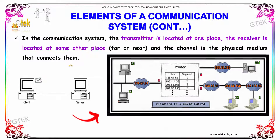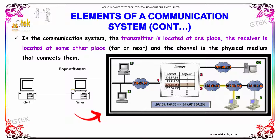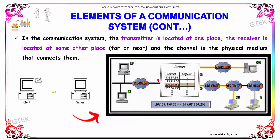In the communication system, the transmitter is located at one place and the receiver is located at some other place. The channel is the physical medium that connects between them.